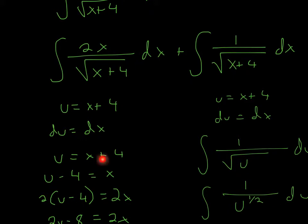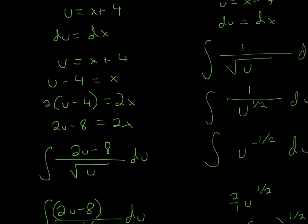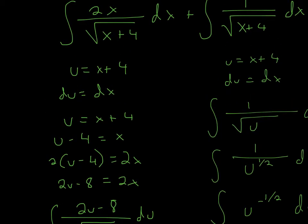The first thing we do is subtract 4 from each side, so we get u minus 4 equals x. Next we multiply both sides by 2, so we get 2x on one side and 2(u minus 4) on the other, which gives us 2u minus 8. Now we can replace 2x with 2u minus 8.